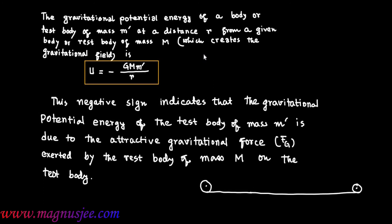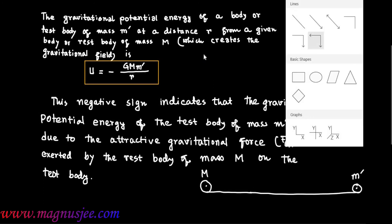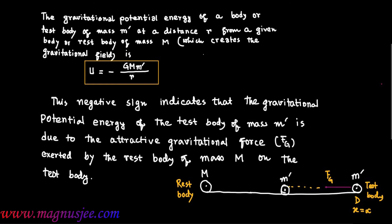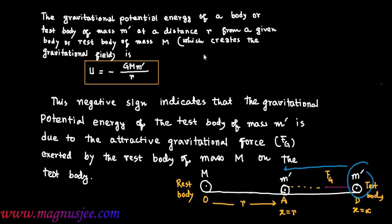The raised body of mass M' experiences gravitational force FG at point D, which is at infinity (x equals infinity). This body will move from point D to A, where x equals R at point A — meaning R is the distance of point A from the raised body of mass capital M. The test body moves from D to A under the attractive gravitational force FG.